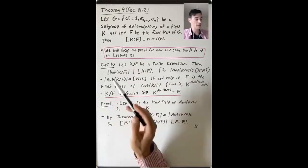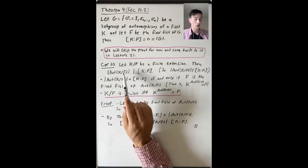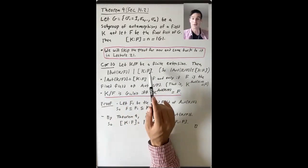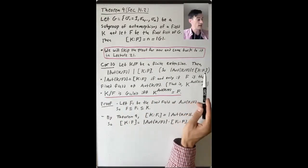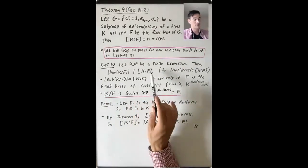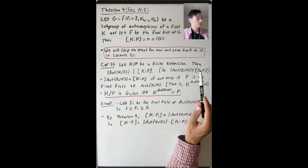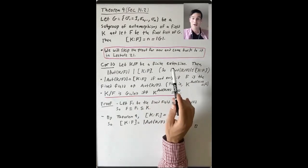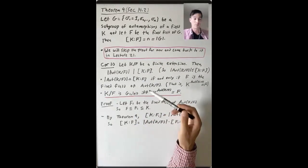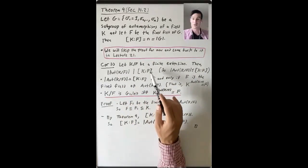Let's start by proving Corollary 10 of this theorem, which says: let K over F be a finite extension. Then the order of the group of automorphisms of K fixing F divides the degree of K over F. The way this is stated in Dummit and Foote is actually just that the order is less than or equal to the degree of K over F, but saying that it divides the degree is a little better, so I want to state it that way.